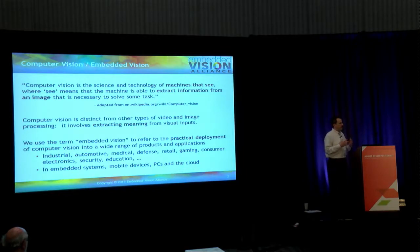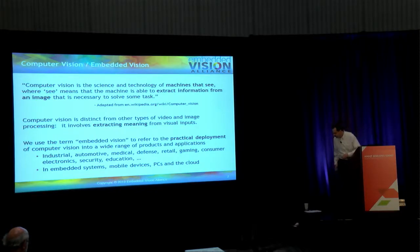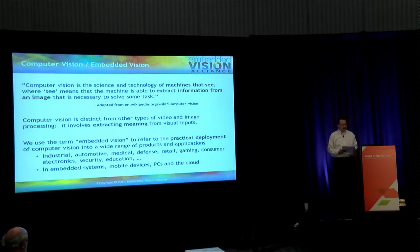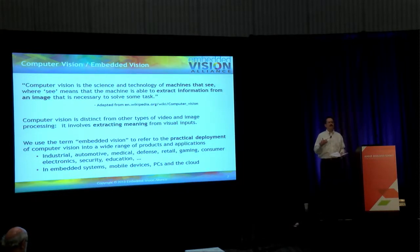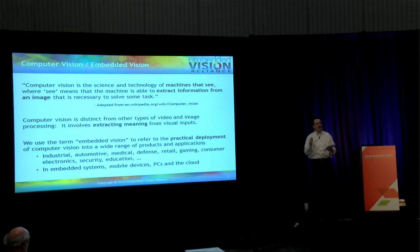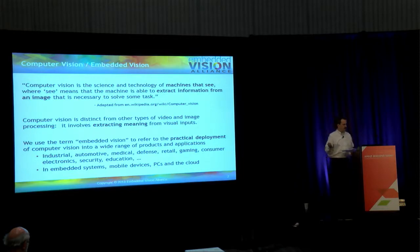Let me revisit some important terminology for this presentation, starting with computer vision. The essence of what computer vision means is machines that see — extracting meaning from visual inputs. There are plenty of systems that process visual data, like a digital still camera — they capture, store, transmit, display, enhance visual information — but they don't try to interpret what that visual information represents. That's not computer vision. Computer vision is where we do try to extract meaning from the visual information. So that's what distinguishes vision from other kinds of image and video processing.